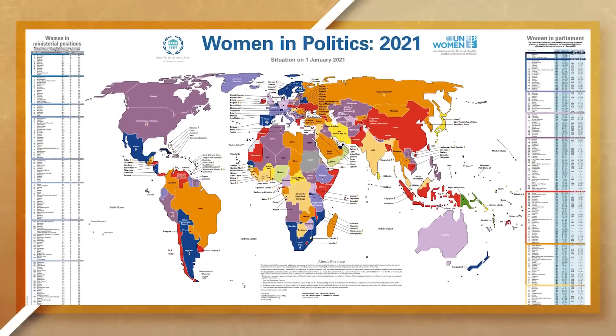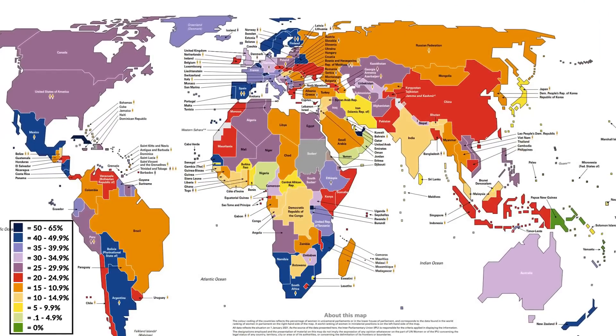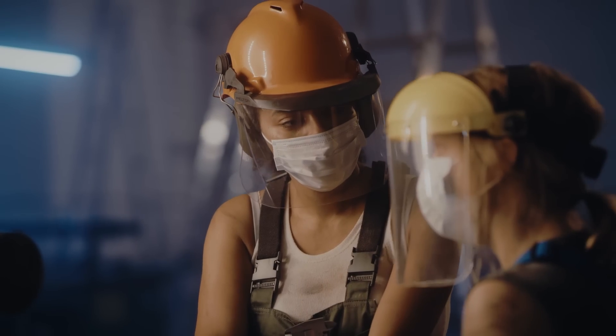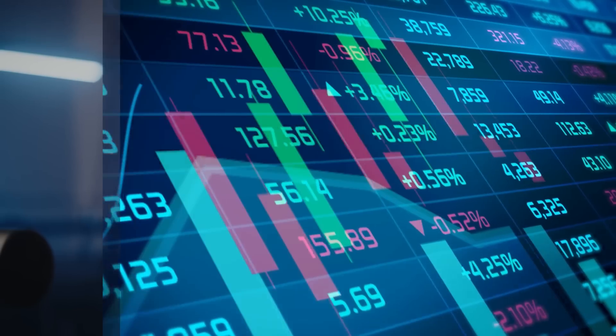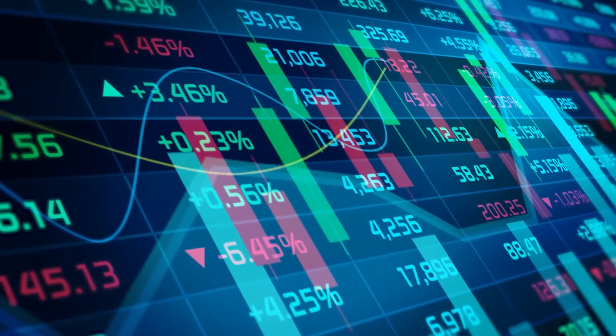Women in less economically developed areas are also less likely to have political representation and may not even be able to own land. But as countries develop both economically and socially, we start to see women gain political and social opportunities, participate more in the formal economy, gain different legal protections, and see land ownership for women increase. Plus, when countries allow women to have a more active role in society, they tend to see higher economic growth and a higher standard of living for all people.